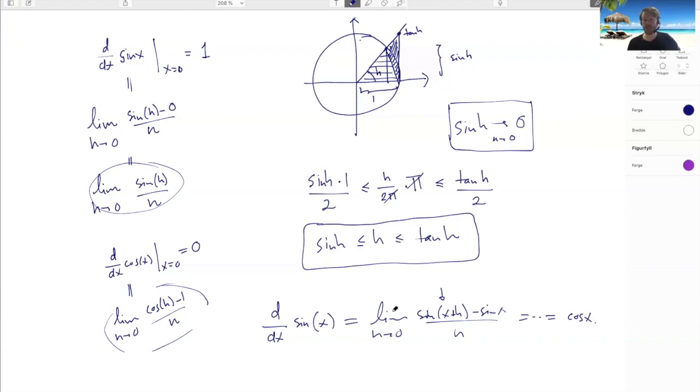And then similarly, you can get the derivative of the cosine. So I'm leaving all of these details up to you, but hopefully I've been able to convey the bird's eye perspective on this.